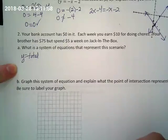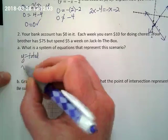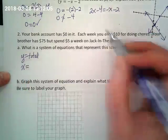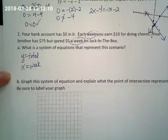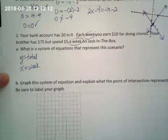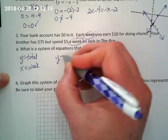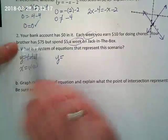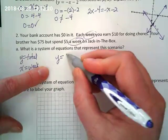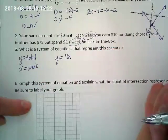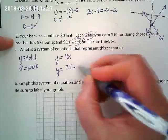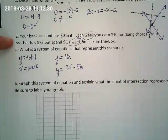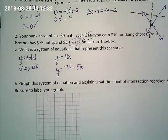I made x equal weeks. The two equations: the first one I wrote was for your bank account, which is y equals 10x. The second was for the brother's bank account, which is y equals 75 minus 5x. Then there were lots of ways to solve it.